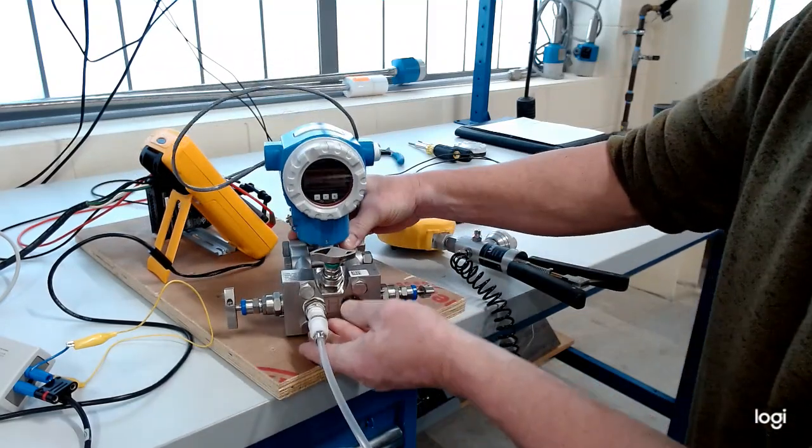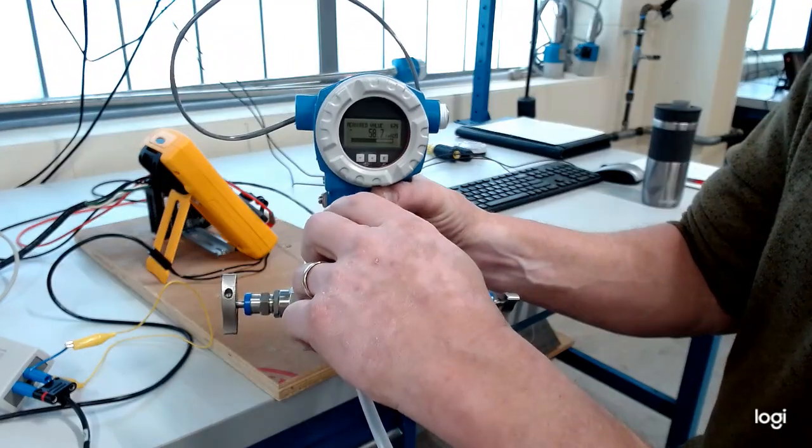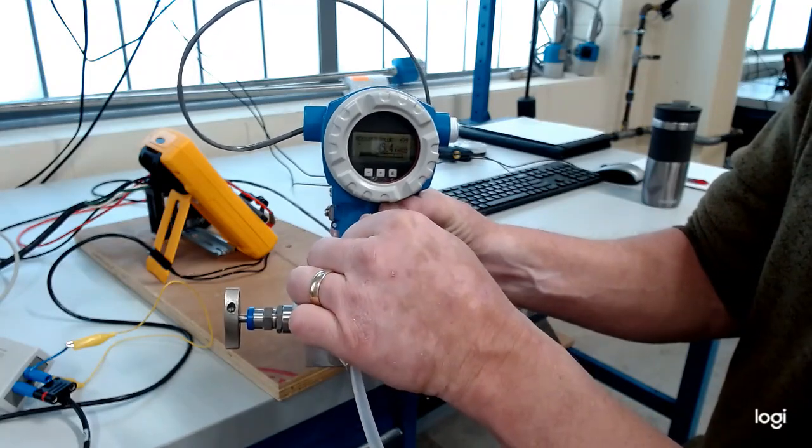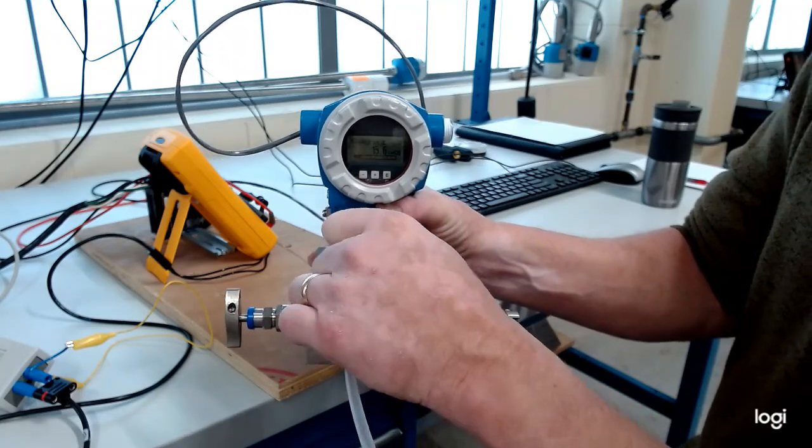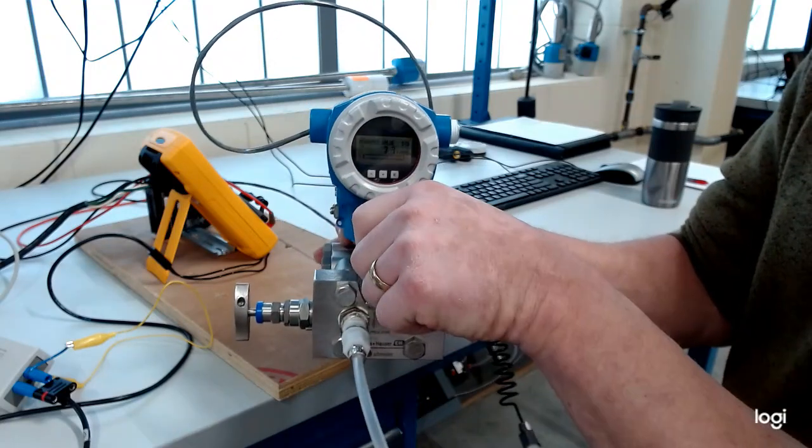So if I open this equalizing valve right here, it's going to allow a path to the low side. It's actually going to bleed all that pressure out. So watch it go away. See that? So it just bled it right out this port. That's why it's important to keep that valve closed.